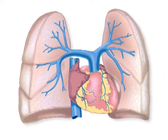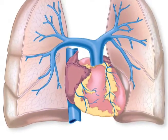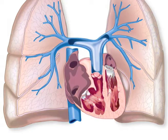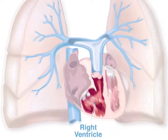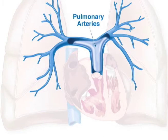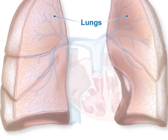To help explain pulmonary hypertension, let's look inside the heart and lungs. We'll talk about the right ventricle, the pulmonary arteries, and the lungs.